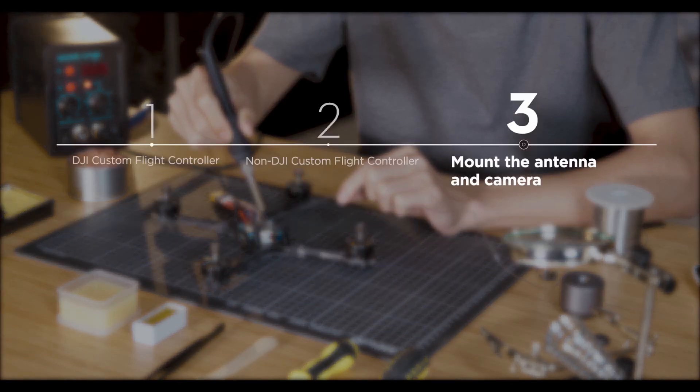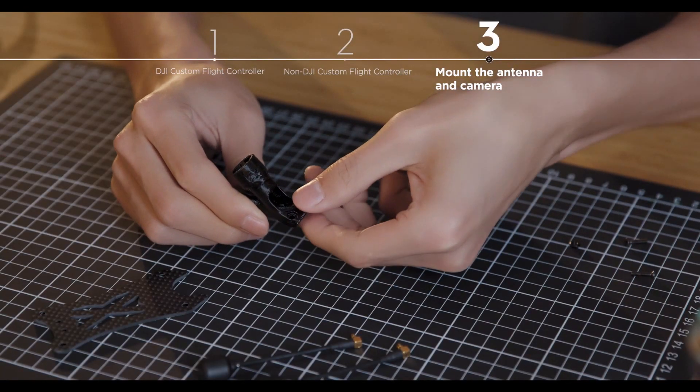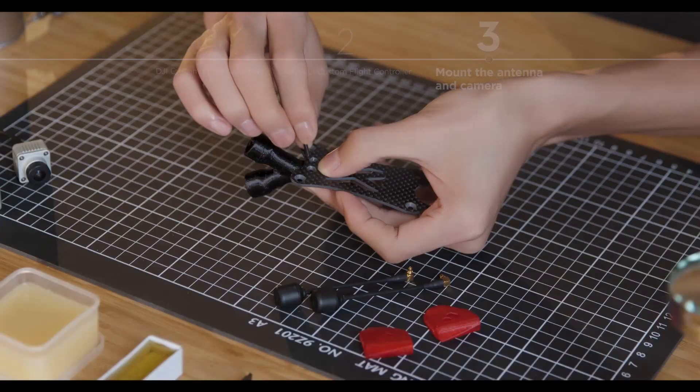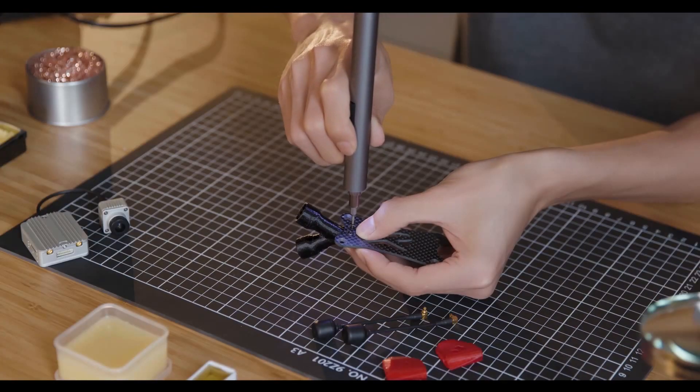mount the antenna holder on the carbon plate found at the top of the aircraft. Tighten the screws and mount the antenna onto the holder.